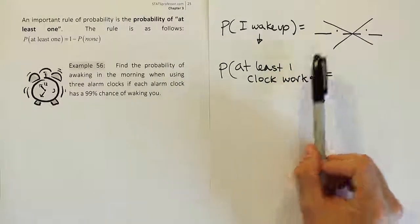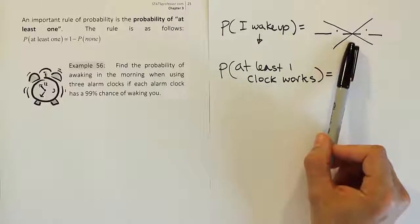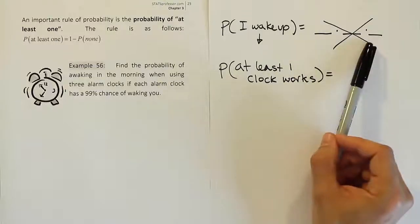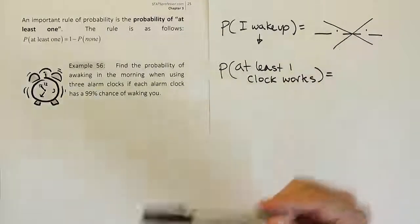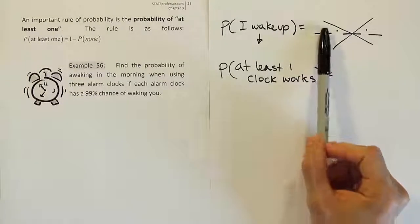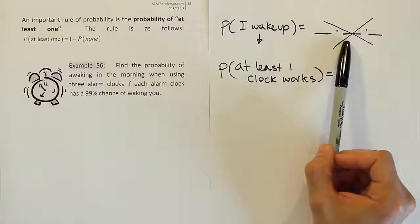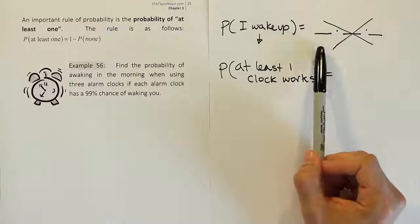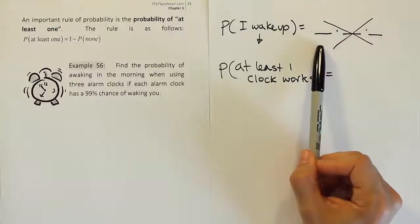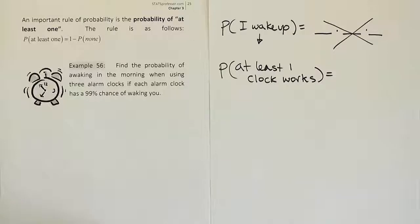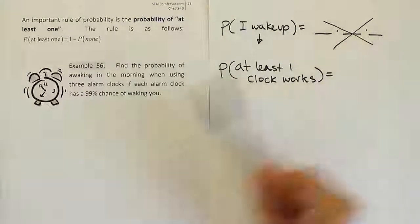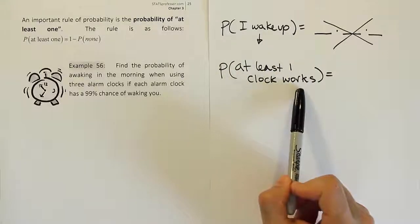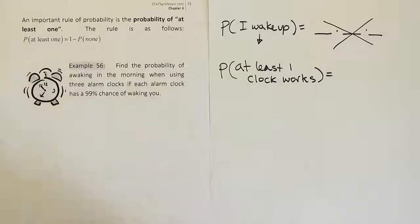Because it's not the probability that one clock works. In probability that's a very specific meaning. That would mean exactly one works and two do not. So you have to say that at least one clock works. Because what that means is one or more of the clocks work. And in any of those scenarios we can wake up. Either one clock will work and it will be the first one and we wake up, or maybe the second one works and we wake up, or maybe the third one works and we wake up, or maybe two of them work. Or maybe all three. There are actually seven separate scenarios that would wake us up.